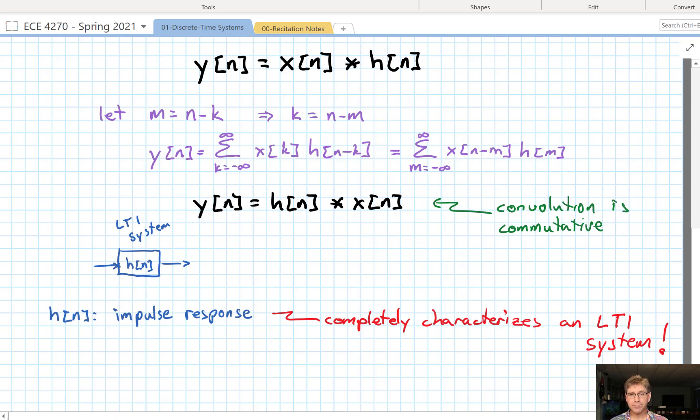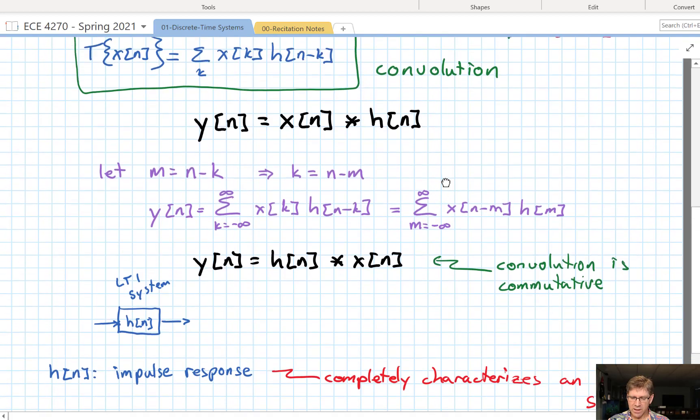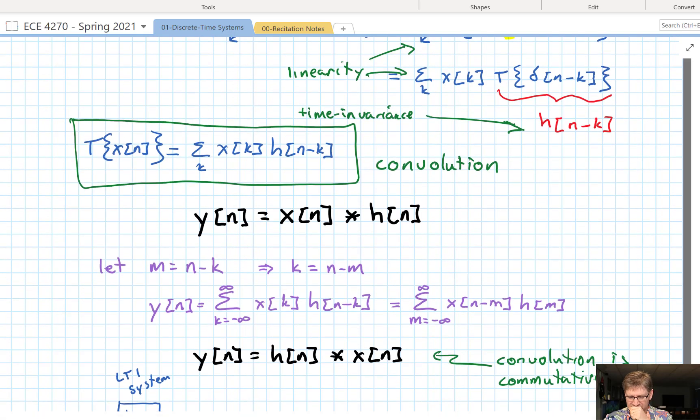So, once you have h of n, you know everything about the system, as long as you know it's time invariant. Okay. So, what's going on here with the convolution equation? Let's go back and look at what this is. Looking at this right here. This lends an interpretation to us. It says that we can take our sequence of impulses, which are different heights, and make up our x. Then we put it into the system.